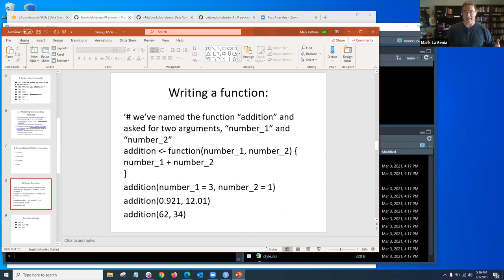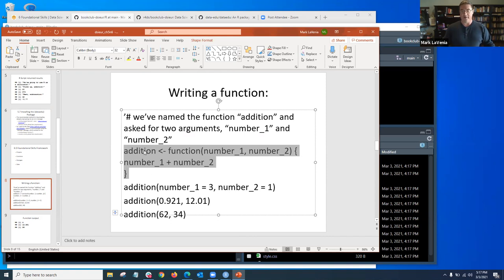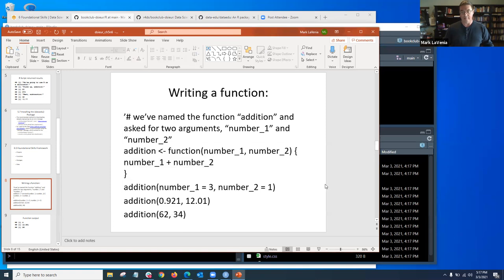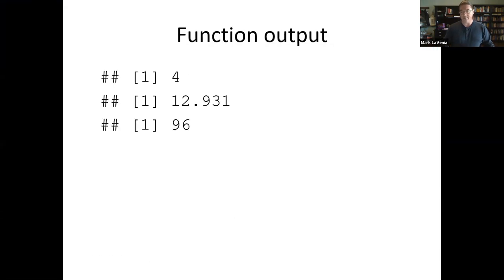You can create a function. What you're looking at here — this is what the function does. You say: create a function called 'addition' and it's going to have two numbers, which we're calling number one and number two, and what we want them to do is add number one and number two together. That's the function. Then once you create that function, you can just say 'addition' — and here you can be explicit, saying number one equals three, number two equals one, or it just assumes order and you put those numbers in.